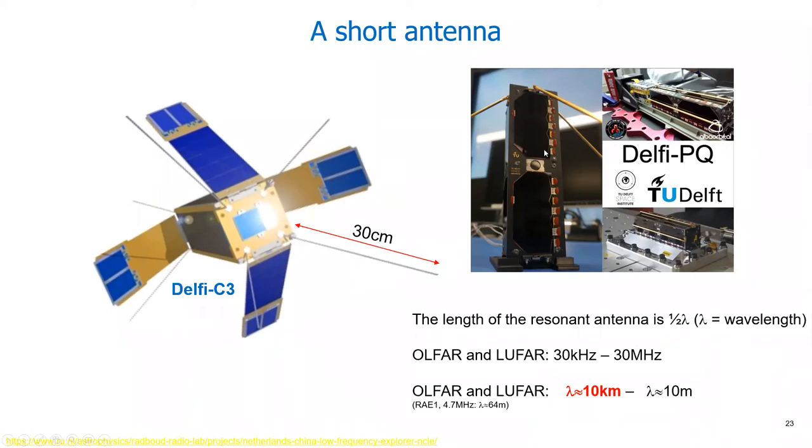At the moment there is a satellite ready for launch which is Delfi-PQ, which only has antennas of 17 centimeters. This one has a radio astronomy payload on board, a payload to look at the very low frequencies.